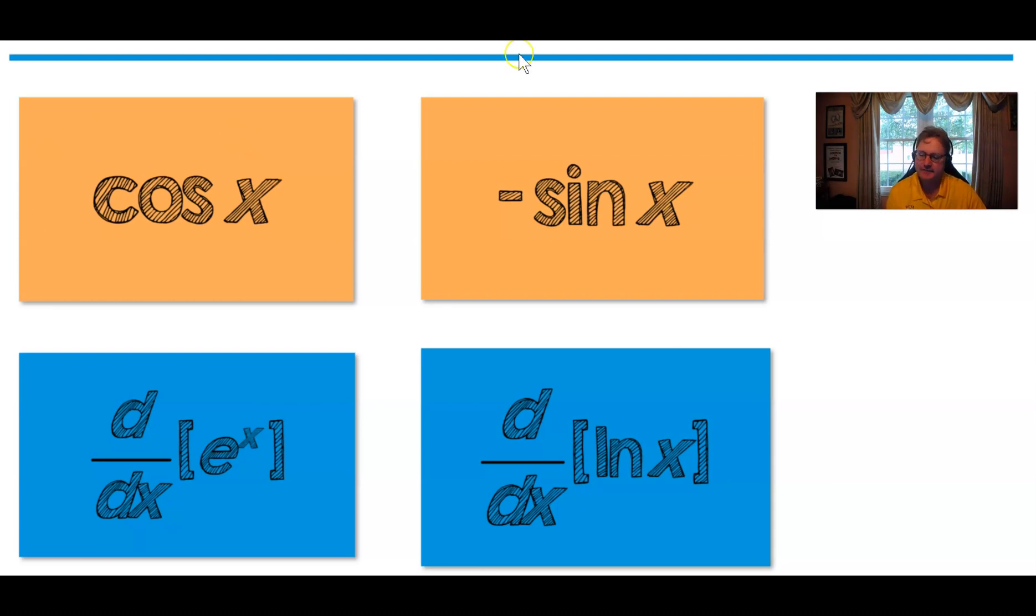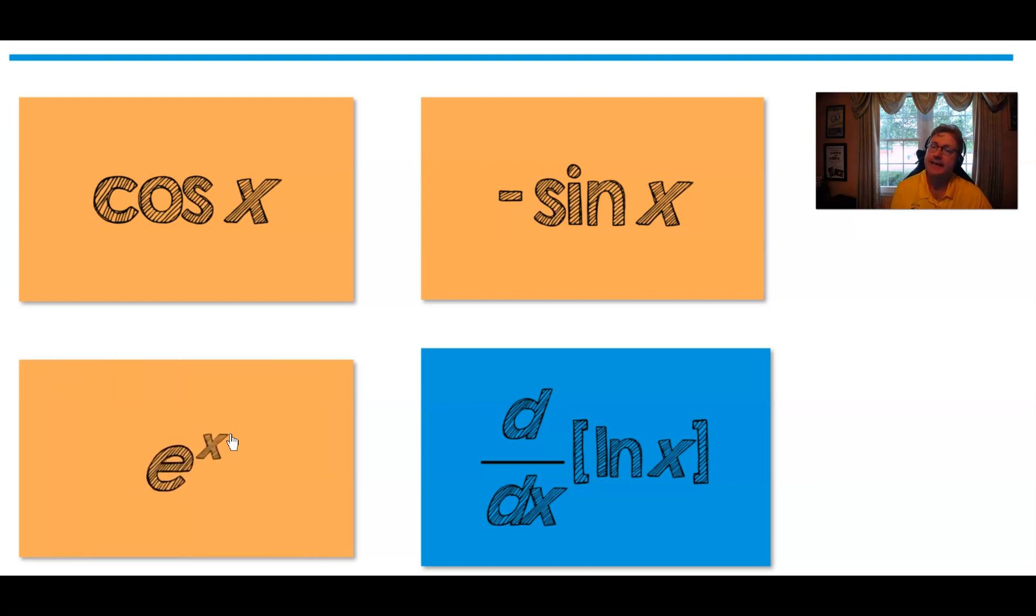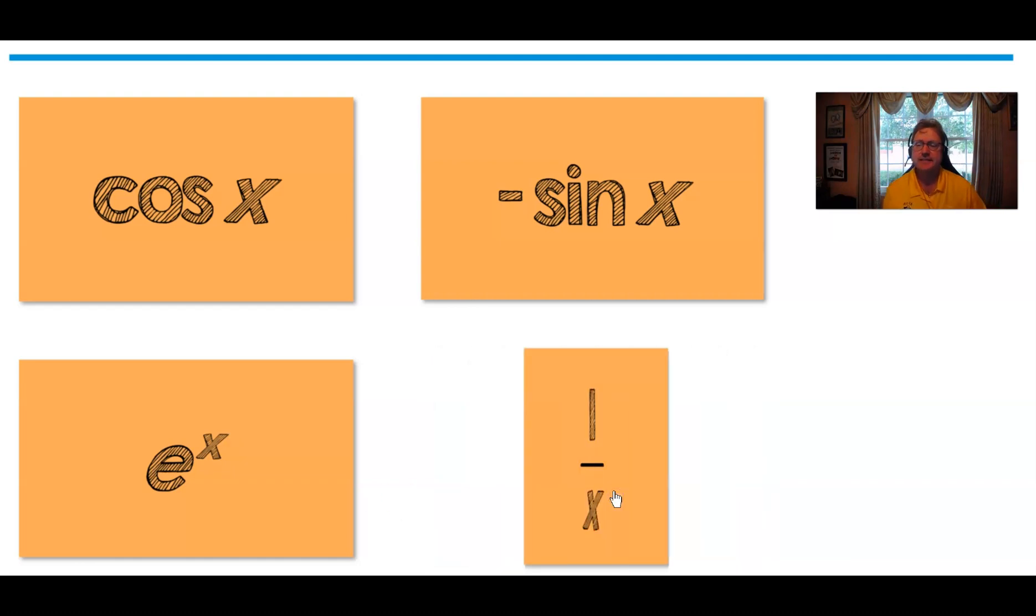Let's jump down to the lower left. This is one that we always hope that you get correct very early on. But who knows? It's early. You got time to memorize it. Derivative of e to the x with respect to x. The answer is e to the x. Nice job. Let's look at one more. The derivative of natural log of x. Derivative of natural log of x. Think about it for a moment. And the answer is one divided by x.